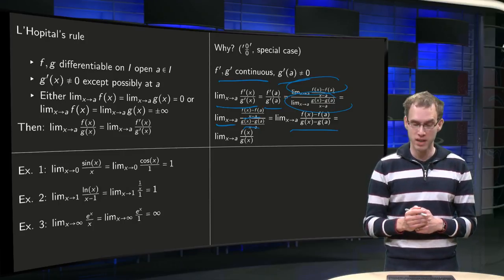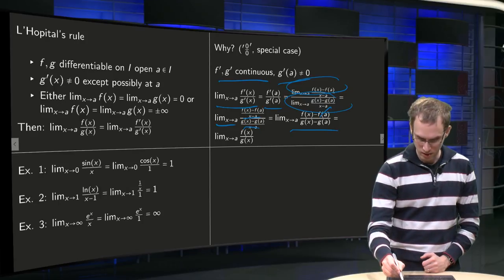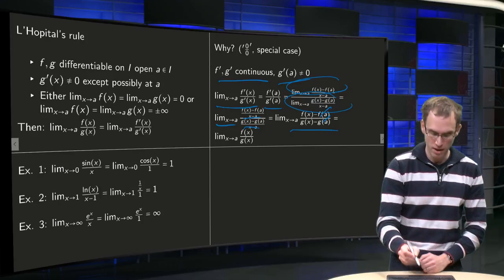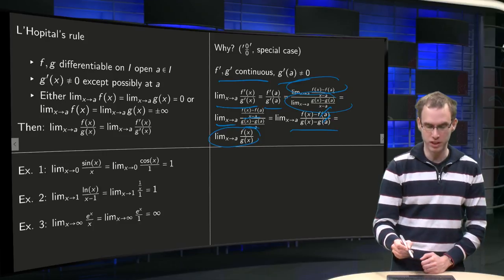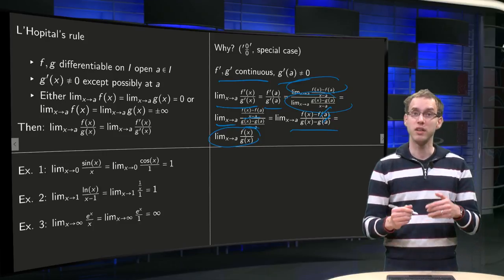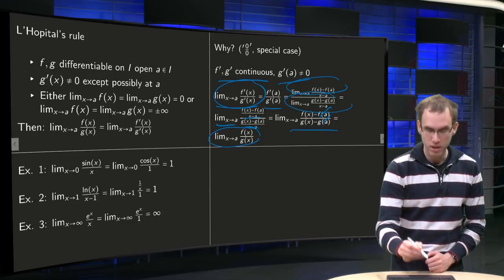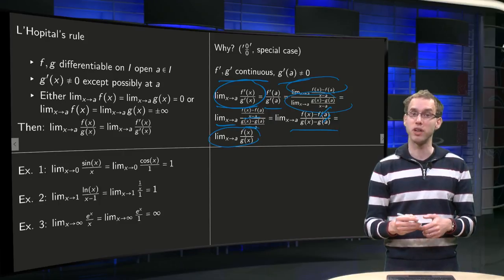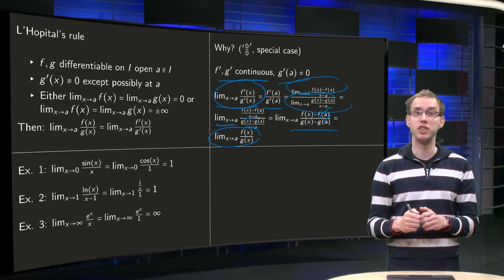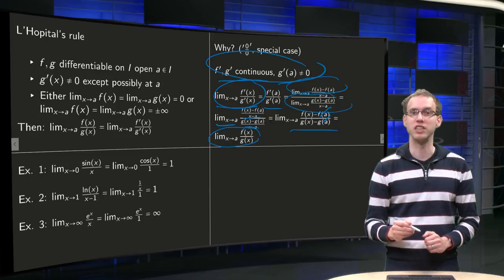And then we use the fact that we have the 0 over 0 case. So f(a) equals 0, g(a) equals 0. So we can cancel those factors out. And we get our limit x to a of f over g. And then we see why our limit x to a of f' over g' equals our limit of f over g. In this special case with those conditions.